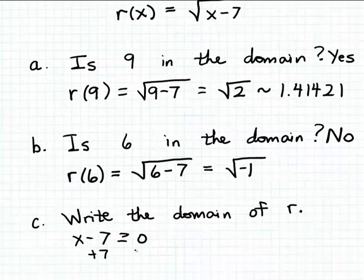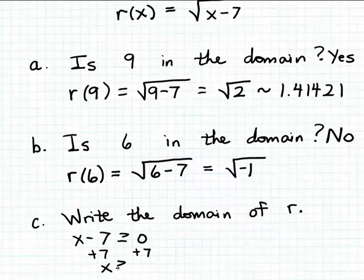And that's very easy to solve. We can just add 7 to both sides of the inequality. And so we see here that for x minus 7 to be greater than or equal to 0, x itself has to be greater than or equal to 7. And this tells us the domain of the function r. It's going to be all real numbers greater than or equal to 7.